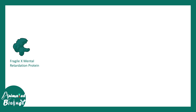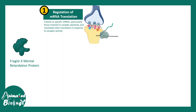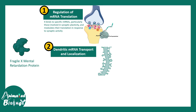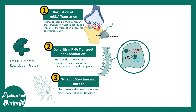Let's talk about the normal function of the Fragile X Mental Retardation Protein (FMRP), because understanding its role in brain development helps us understand the disease pathology. First, FMRP is important for mRNA translation at the synapses — it binds to specific mRNAs, particularly those involved in synaptic plasticity, which modulates synaptic activity and synaptic strengthening. It also regulates dendritic mRNA transport and localized translation at the dendrites, facilitating transport of mRNAs into dendritic spines, which are sites for synapse formation.